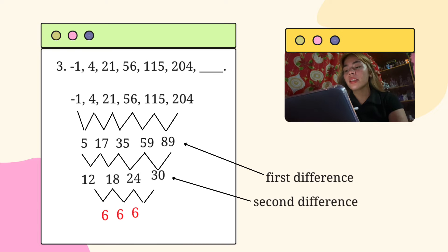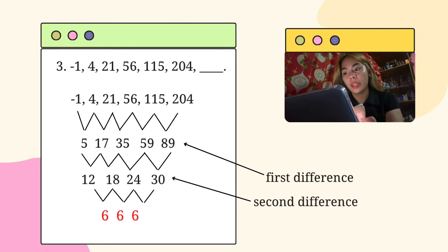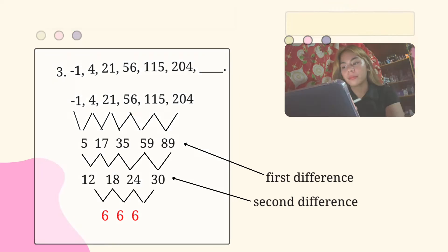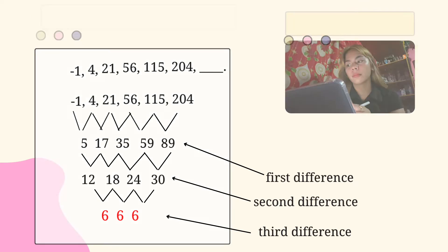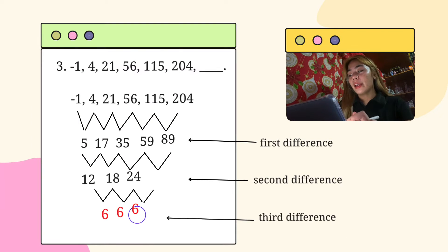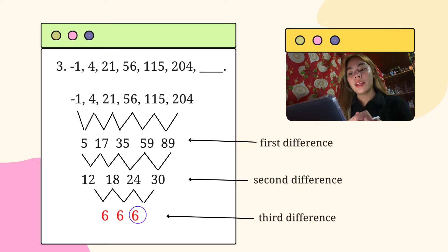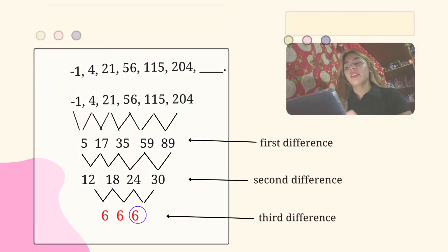Since the second difference does not repeat itself, we need to get the third difference by simply repeating the procedure that we did to get the first and second differences. And this will be the third difference. Then we will add the third difference repeating term to the last term in the second difference. So the answer will be 36.